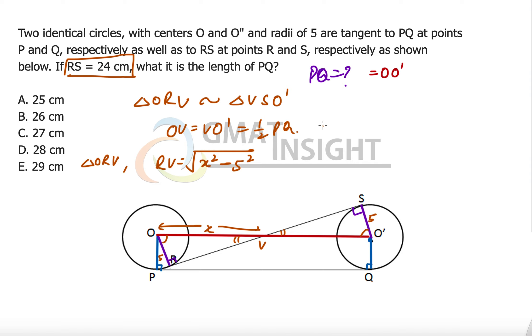And RS has to be twice of RV. So let me quickly write it down. RS is equal to twice of RV which is equal to twice of square root of x square minus 5 square, and this is given to us as 24, which means the square root of x square minus 5 square is equal to 12.